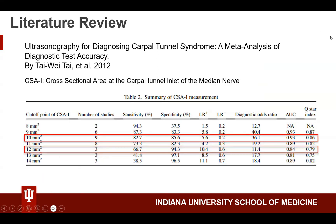Looking at the literature, a meta-analysis showed that the cross-sectional area at the carpal tunnel inlet of the median nerve is predictive of carpal tunnel syndrome. This meta-analysis looked at different cutoff points for the cross-sectional area and how sensitivity and specificity change. If you use an 8mm² cutoff, you'll have a pretty low specificity, meaning a lot of false positives.